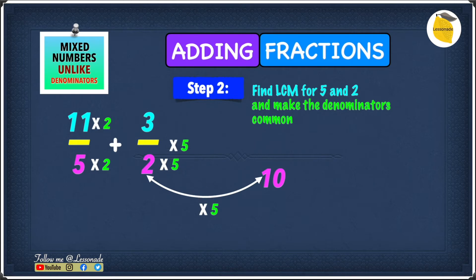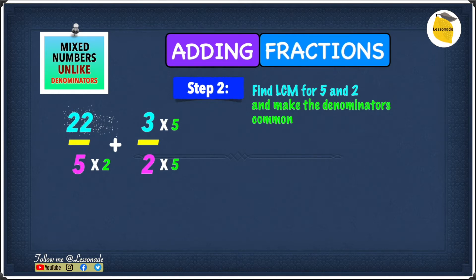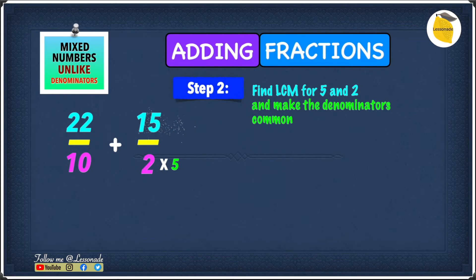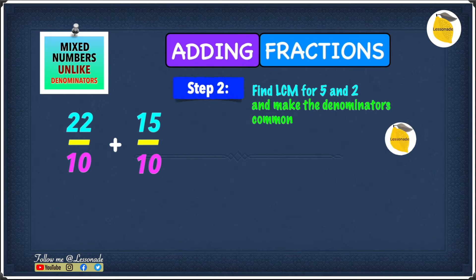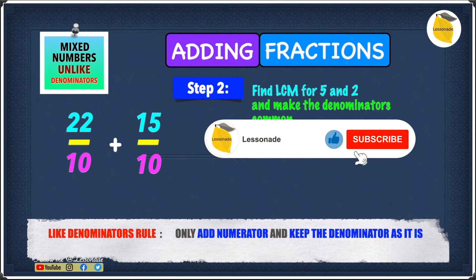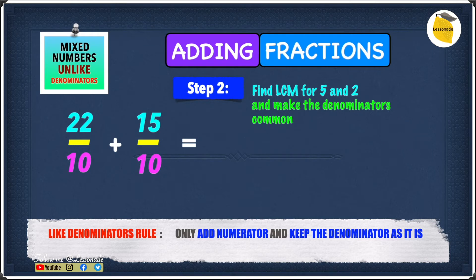We multiply the bottom number and the top number — as we said before, whatever you do to the bottom number you have to do to the top number. So 11 times 2 gives us 22, and 5 times 2 gives us 10. Then 3 times 5 gives us 15, and 2 times 5 gives us 10. We now have 22 over 10 plus 15 over 10. As you can see, both of these are like fractions, so it is much easier to add — we just add the numerators: 22 plus 15 gives us 37.